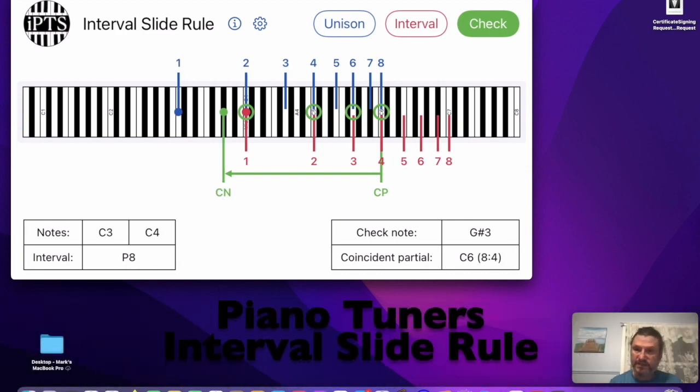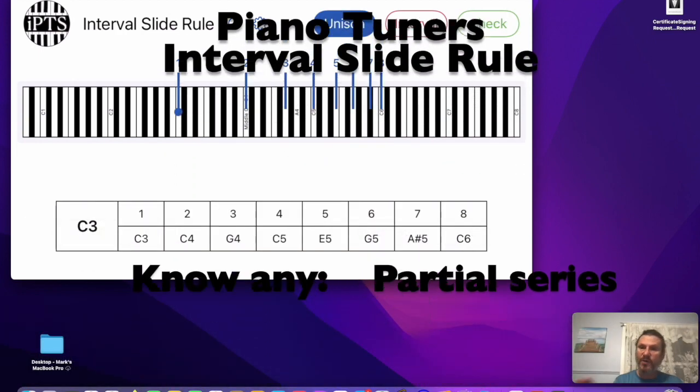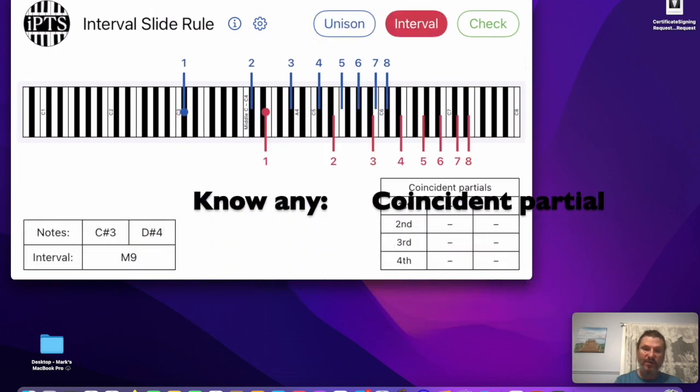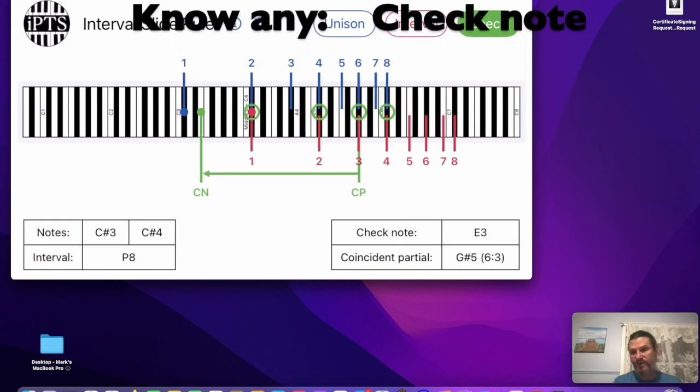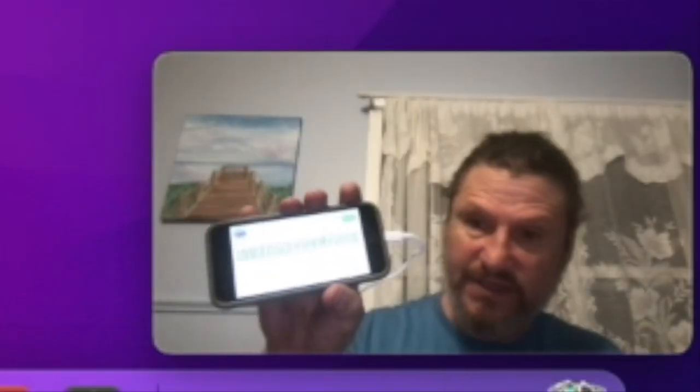So this is how it works. The interval slide rule. Know any partial series at your fingertips. Know any coincident partial at your fingertips. And know any check note for any interval at your fingertips. So look for a link below for this app.